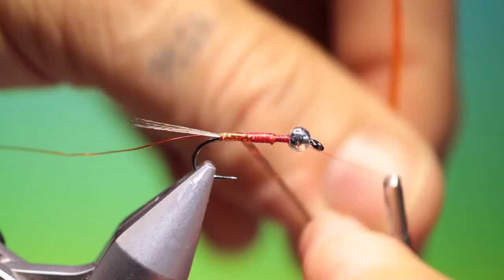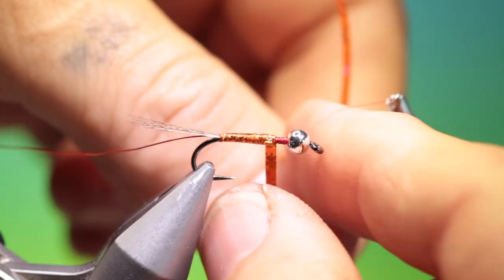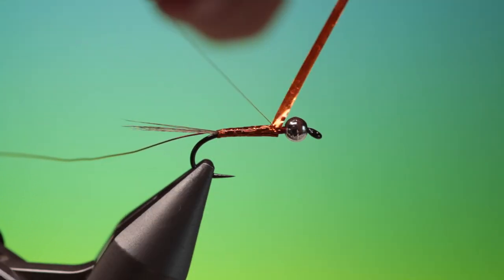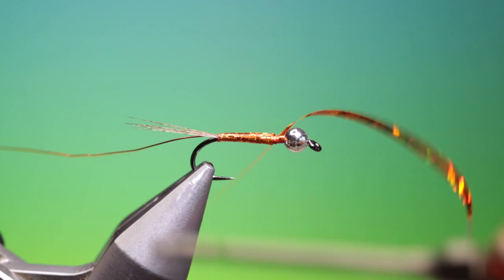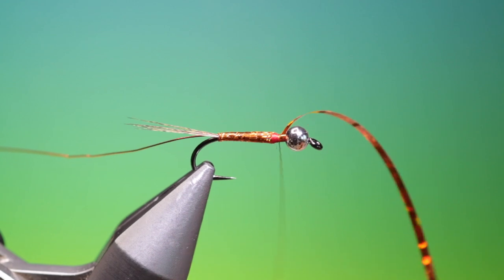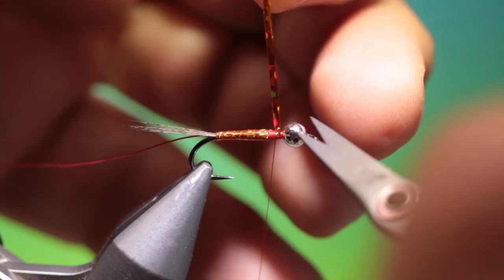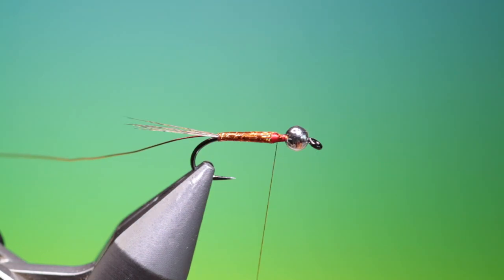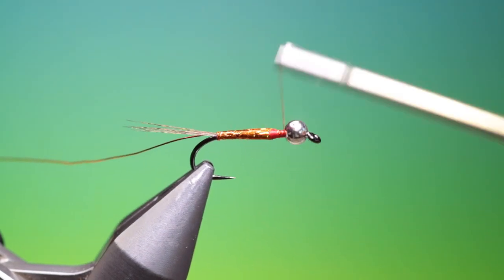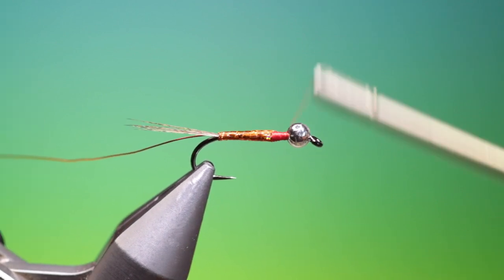Go back up here and then we can take our holographic tinsel. Tight, neat turns up the body towards the thorax. Tie that off there. Go back nice and tight into the abdomen. Make sure your bead's always forward, otherwise you can be fooled by how long the thorax is going to be.